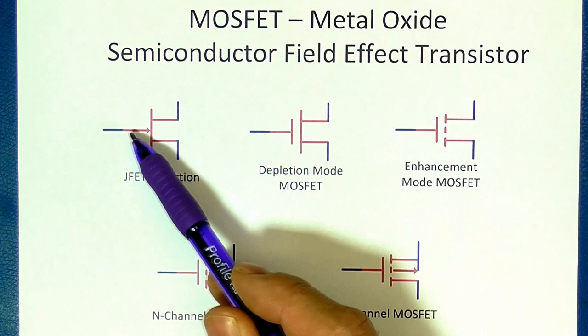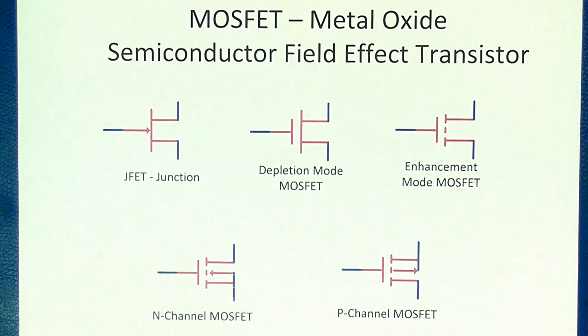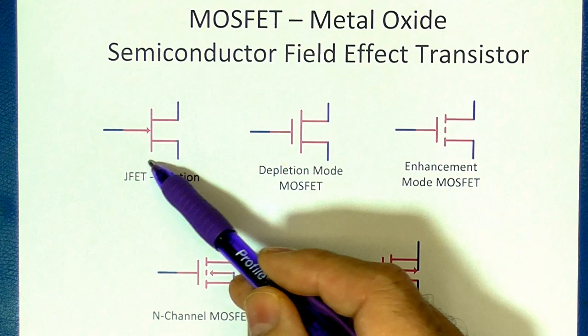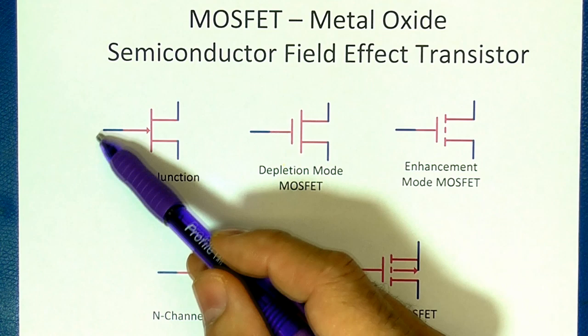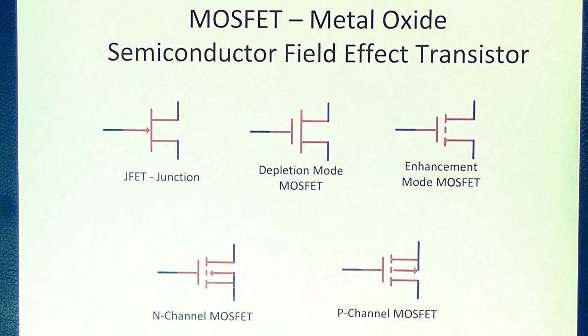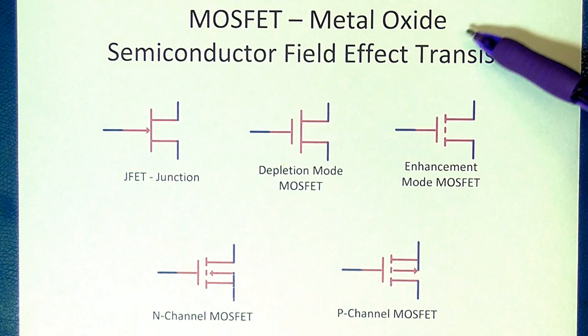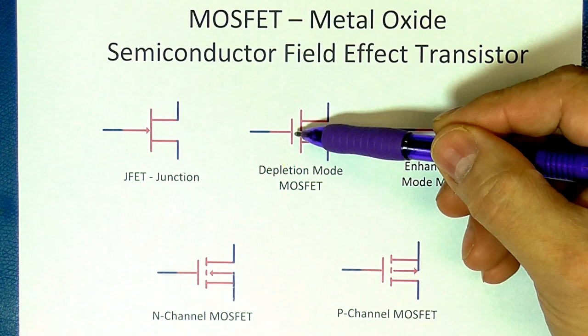MOSFET — metal oxide semiconductor field effect transistor. Before I jump into that, you may have heard of a junction FET. In that case, the gate — which acts like the base in a transistor, the controlling pin — actually touches the rest of the device, hence the word junction FET. It has a lot of uses; they're kind of rugged. But the current here joins with the other currents. It's not as high impedance — higher impedance than some, but not a true MOSFET. In a MOSFET, metal oxide — the oxide means insulator, silicon oxide in this case. And that's this air gap here, and if that looks like a capacitor, I'll tell you that's a capacitor.